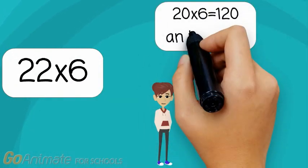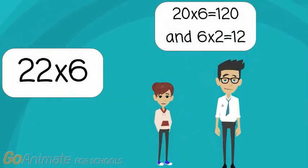What is 22 times 6? 20 times 6 equals 120, and 6 times 2 equals 12. And 120 plus 12 equals 132.